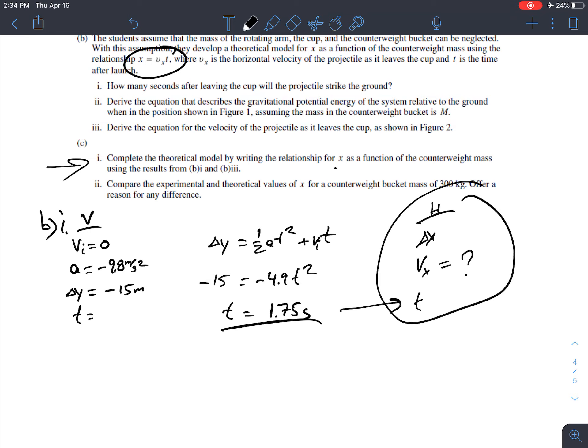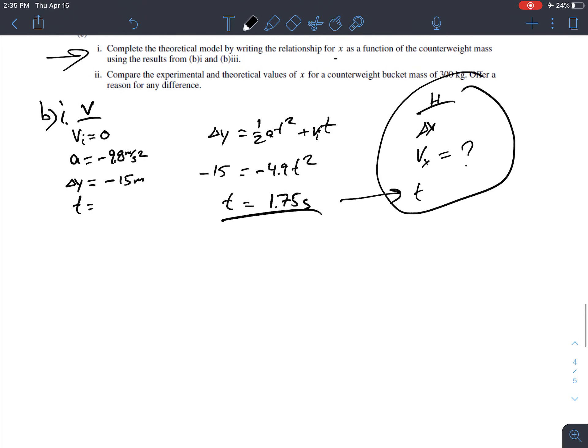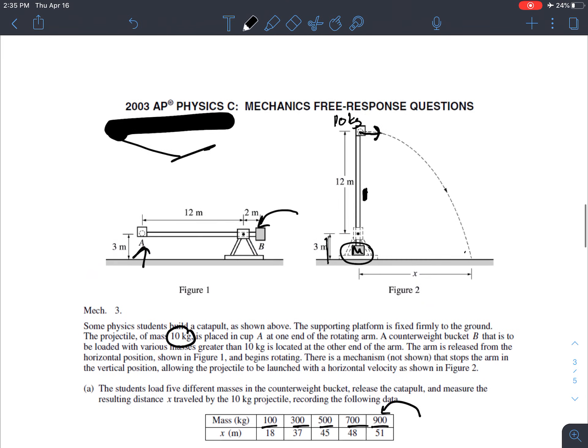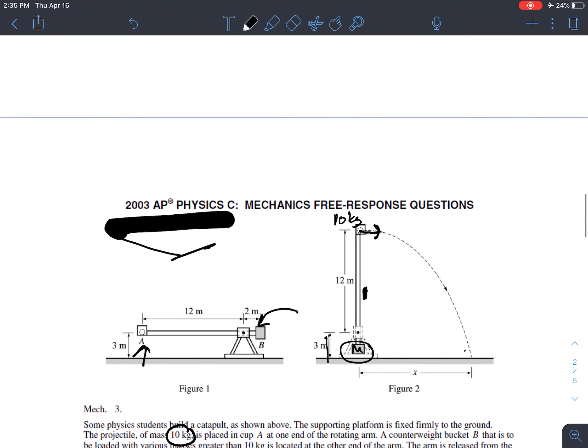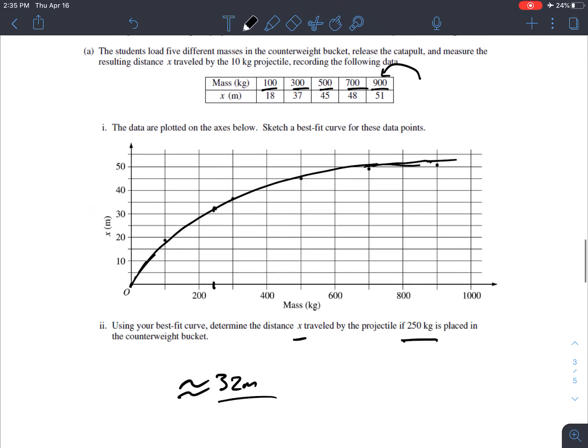So B part two: derive the equation that describes the gravitational potential energy of the system relative to the ground when in position in Figure 1, so before the launch. All right, so before the launch, the total gravitational potential energy is the mass of the projectile, which is 10, times g, times I think everything has a height of 3 right before the launch. It's 3 meters here, so that and that are both at 3.